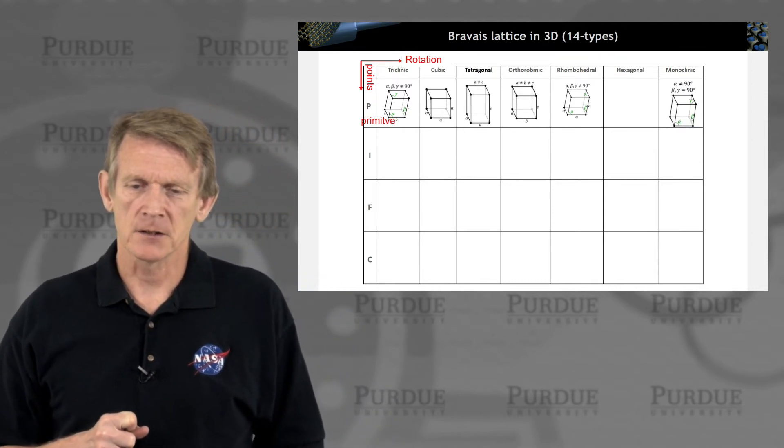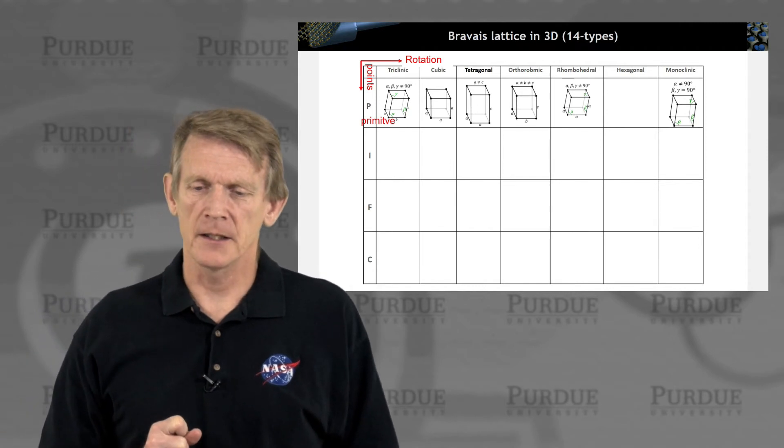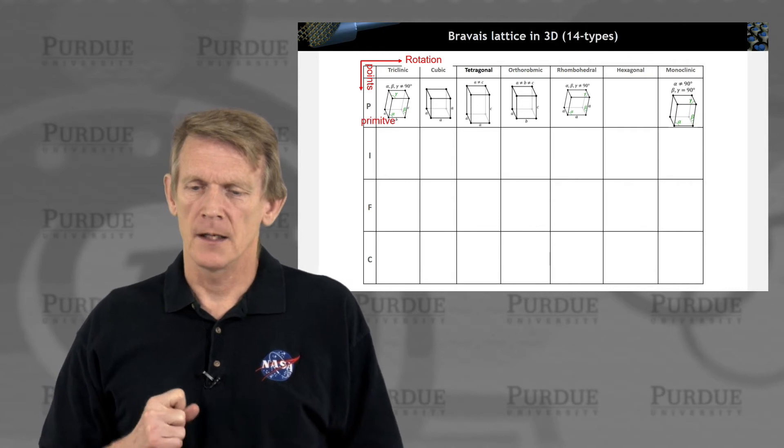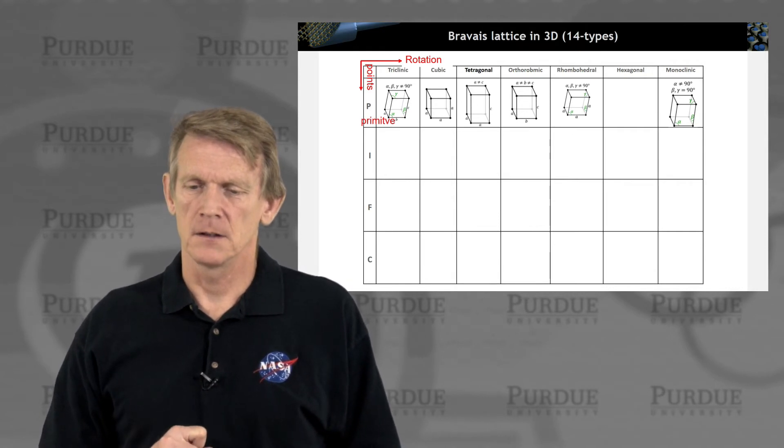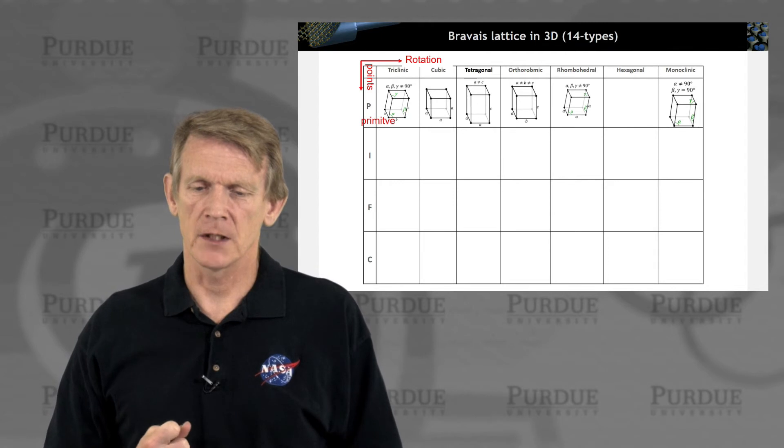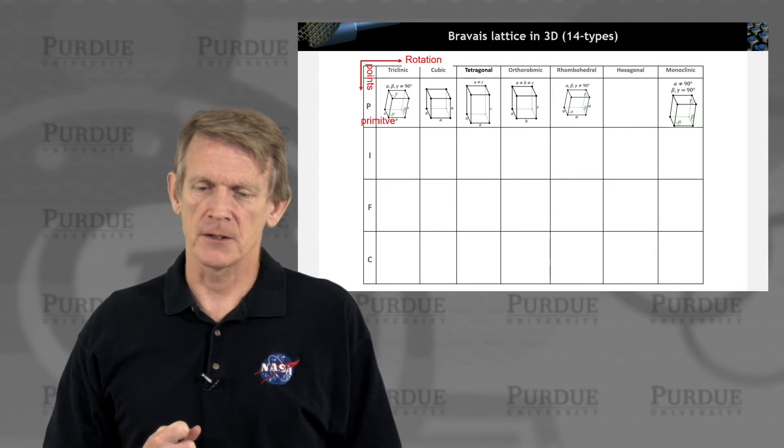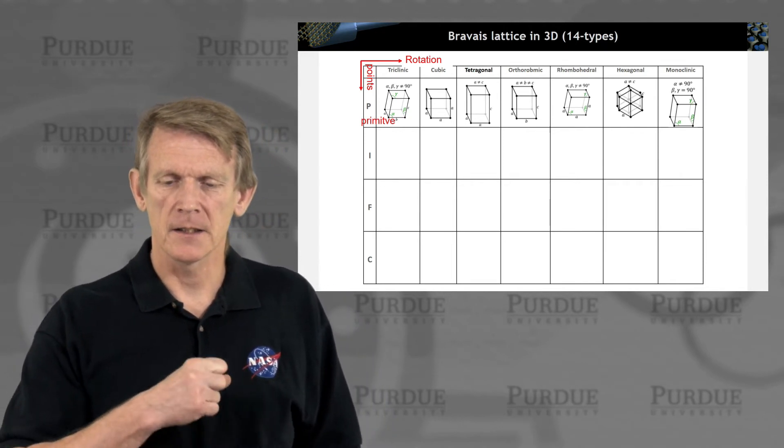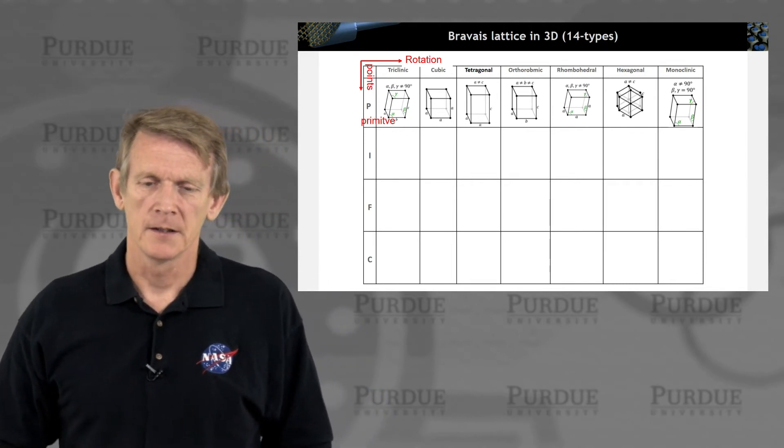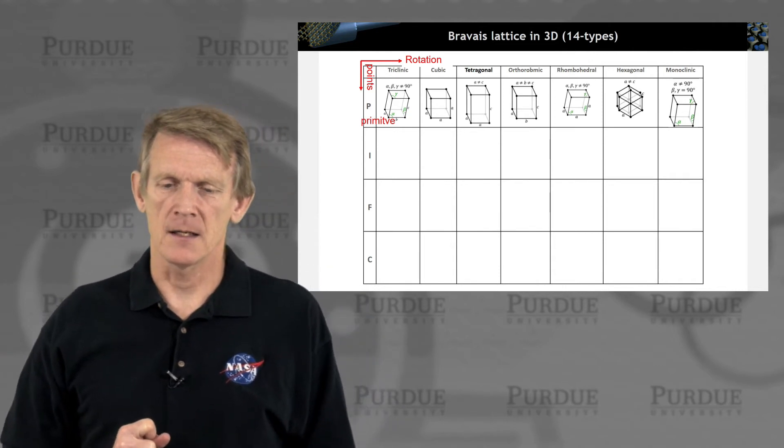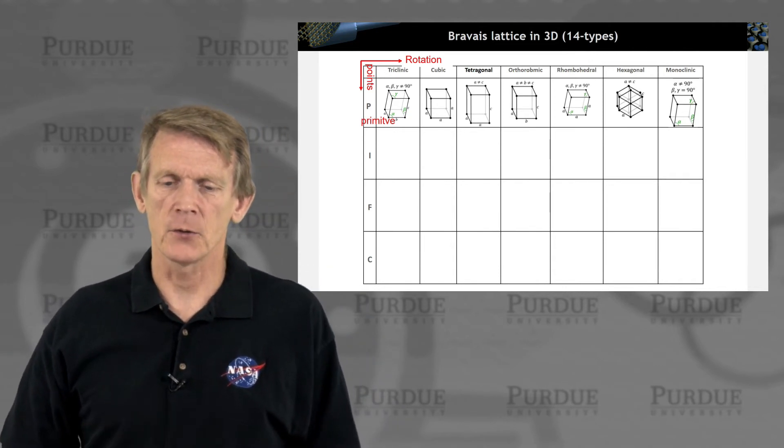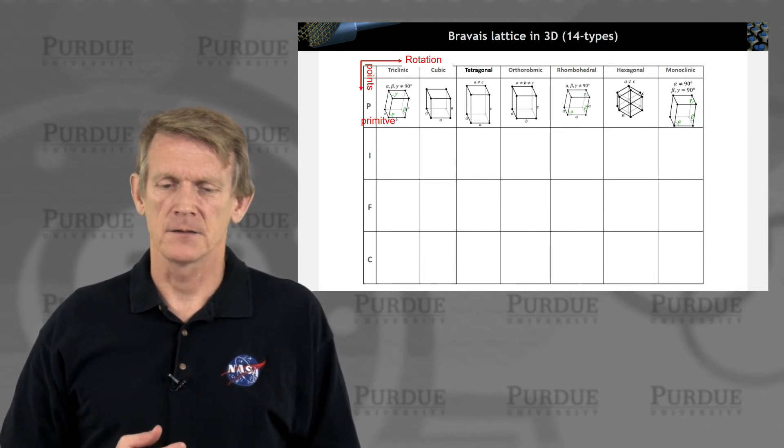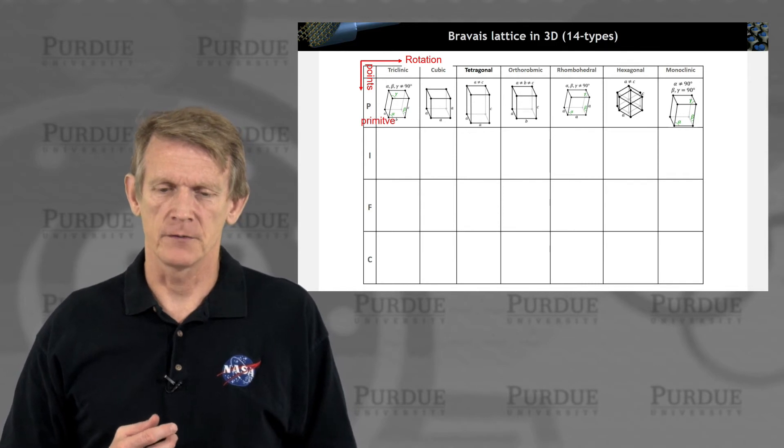There's another special case that's called monoclinic, where two of the angles are 90 degrees and the other angle is not 90, so it changes from 90. So it's a special case from the triclinic. And finally, there is the hexagonal group that's described by two vectors, A and C. C is sort of the growth direction, typically. The vertical one and A are the lengths that make up these triangles in the top surface.